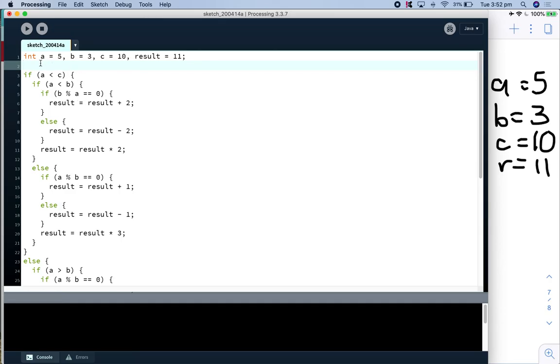So let's start with our tracing. So our first condition says if a is less than c. Well we've got a is 5 and c is 10. So 5 is less than 10, that's true.